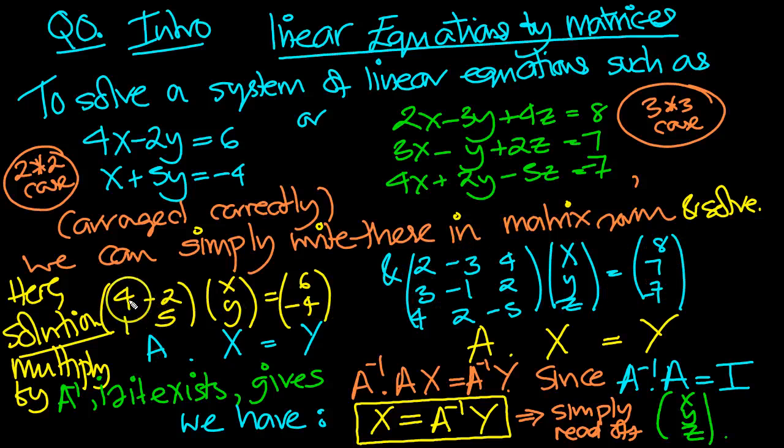So how do you get the inverse? Well, you can write this, label that as a matrix A, capital A. This matrix you can write as x. And this matrix on the right-hand side, you can label as y. And the same goes for this 3 by 3 case as well.